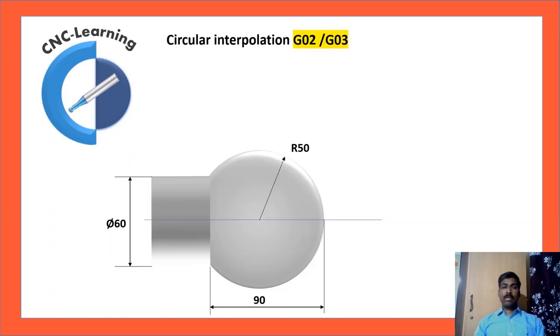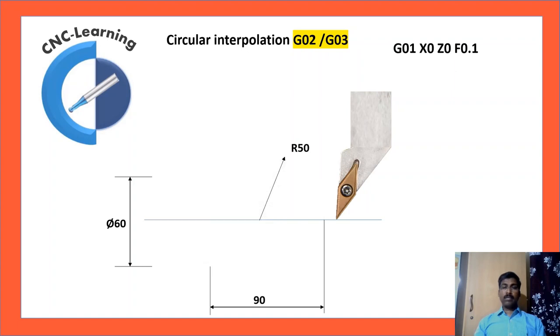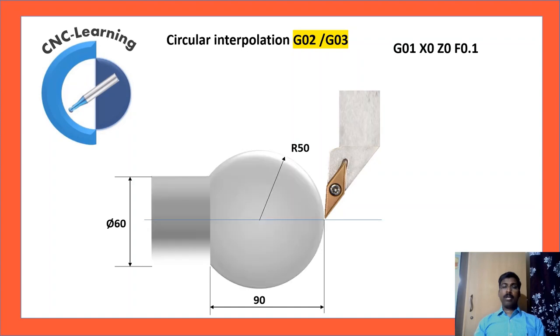Now we will see circular interpolation command G02 and G03. G01, X0, Z0, F0.1. That is the first command to position the tool. G01 is used because the tool is going to just touch the face.